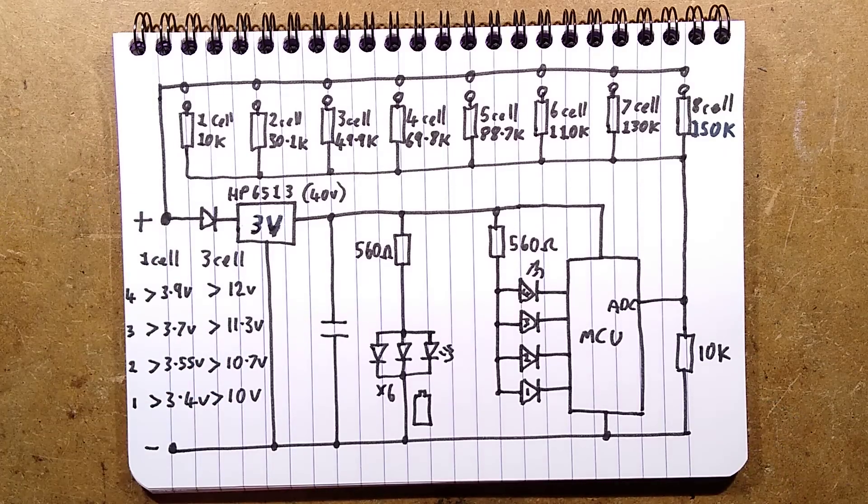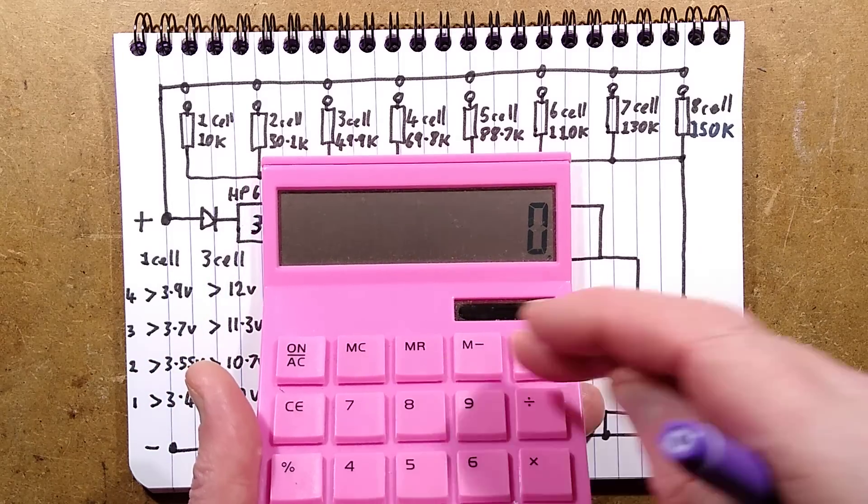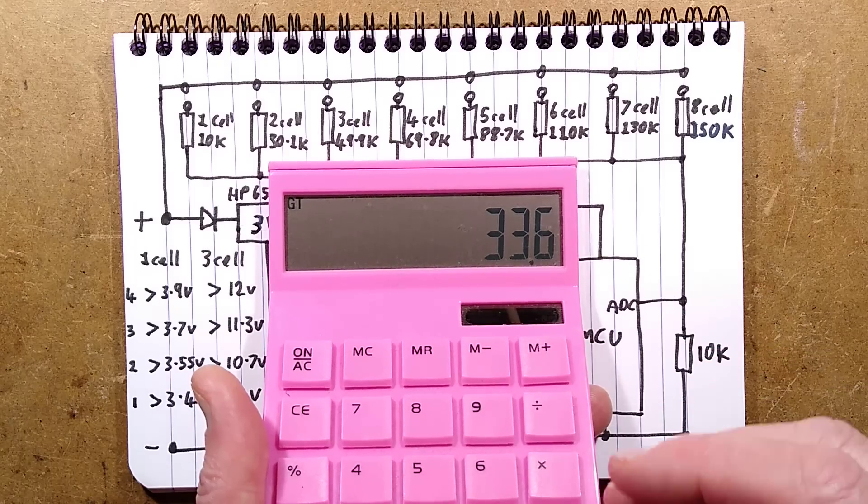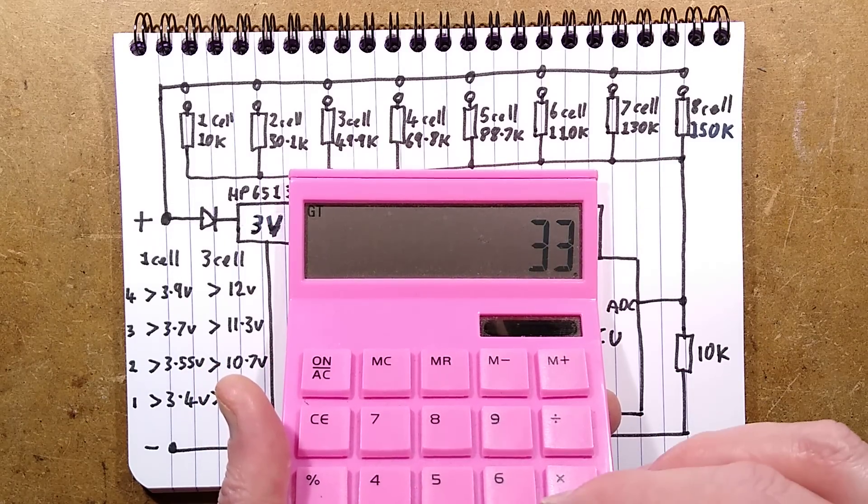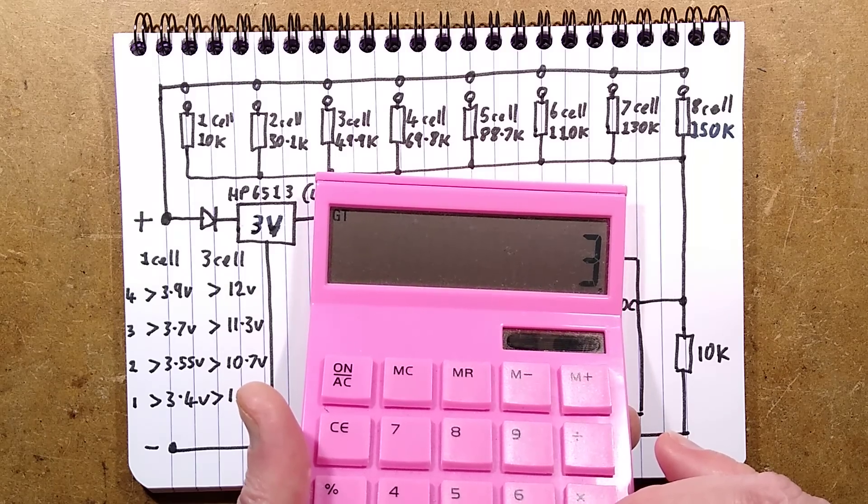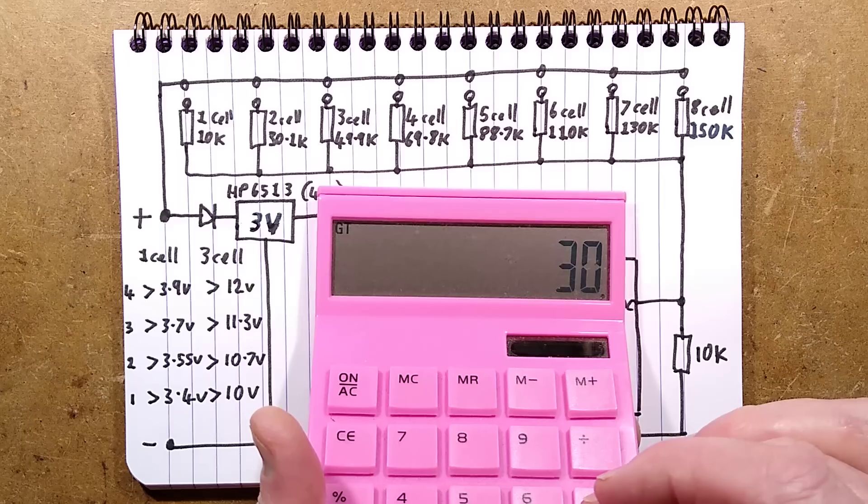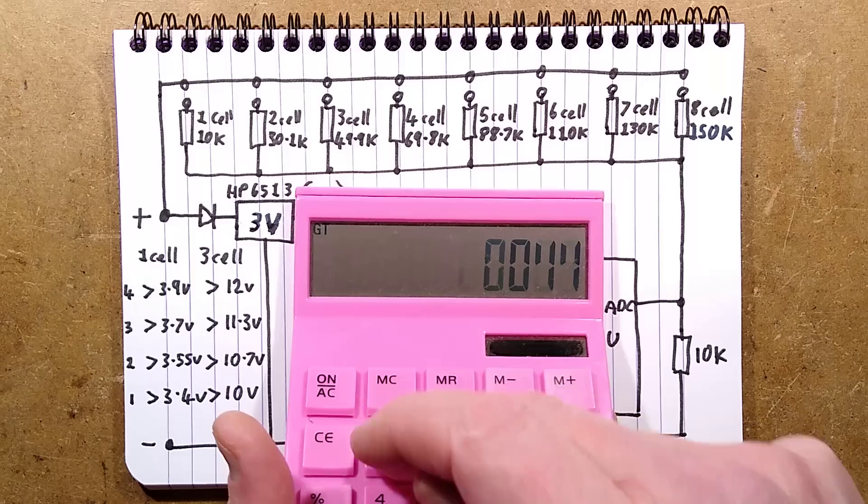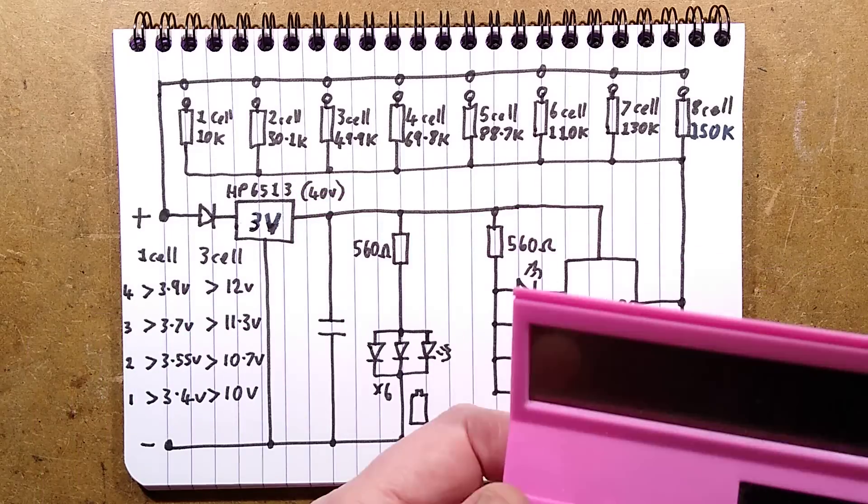And let's work that out. Imagine it was the eight cells times 4.2 volts equals the 33.6 minus the 0.6 ish of the diode, and minus the 3 volt being dropped on the regulator, 30 volts to dissipate, times the 4.7 milliamps, 0.0047 milliamps, equals a dissipation of 0.14 watts. That's all right for this little regulator.